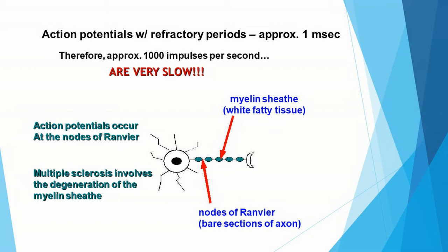As you look at this drawing, you see that the myelin sheath is covering a portion of the axon on the left, and then there's a bare part of the axon, and then you have another portion covered by the myelin sheath and another bare part, and so on. There's a name for those bare parts of the axon: the nodes of Ranvier.